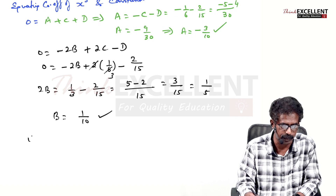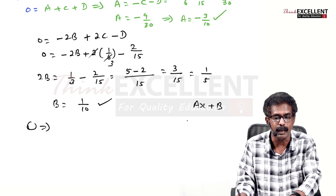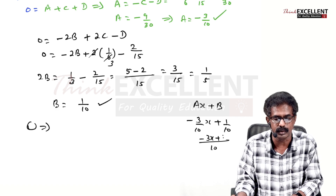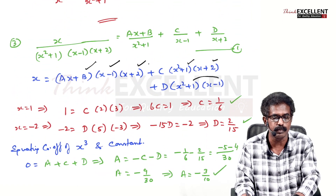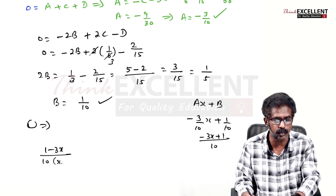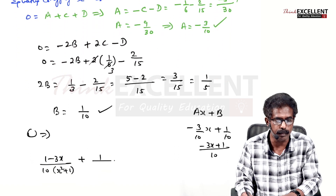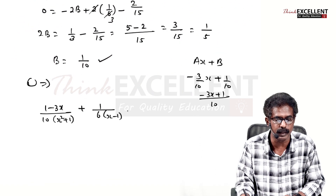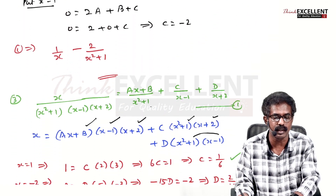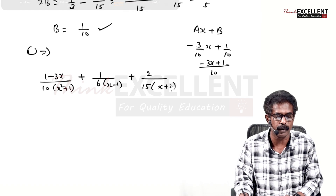All values found: A = -3/10, B = 1/10, C = 1/6, D = 2/15. Substituting back into equation (1): Ax+B = (-3/10)x + 1/10 = (1-3x)/10. The final answer is (1-3x) / [10(x²+1)] + (1/6)/(x-1) + (2/15)/(x+2).